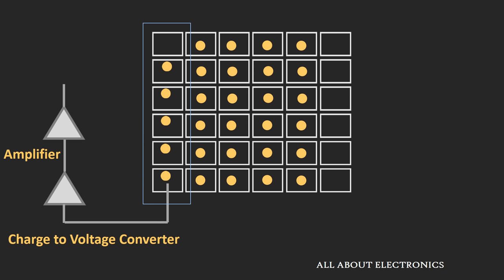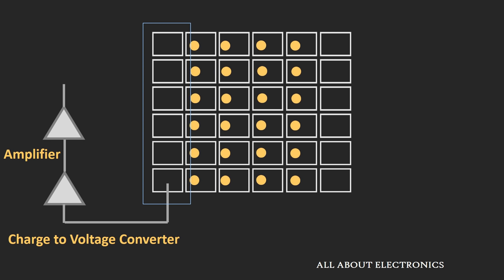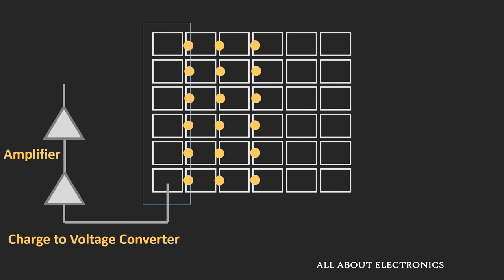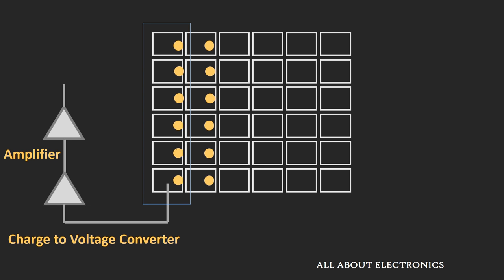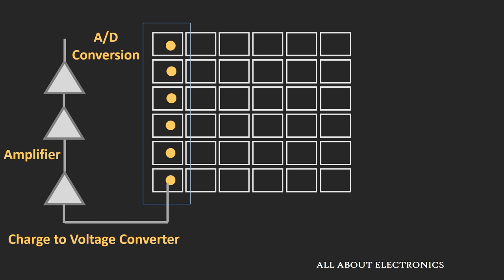In this shift register, one by one, each charge is converted into voltage, and after the voltage conversion, each voltage is amplified using the amplifier. Once the vertical shift register gets emptied, the same procedure is followed for the remaining charge, and one by one each charge is converted into voltage and amplified. Once the charge of each pixel is converted into voltage and amplified, the output signal is converted into digital form using the analog to digital converter. In this way, one by one, the charge of each pixel is converted into voltage, and the same procedure is repeated for the next frame. This is the basic principle of the charge coupled device.